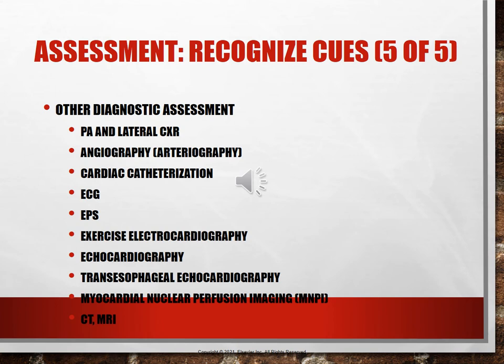Other diagnostic tests include a chest X-ray (PA and lateral), which shows heart size, pulmonary issues, and placement of central lines or chest tubes. Angiography and arteriography are invasive tests using contrast and fluoroscopy to visualize obstructions, narrowing, or aneurysms. They are performed by an interventional radiologist for peripheral vascular issues and by a cardiologist when examining the heart.